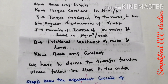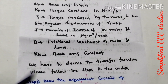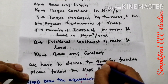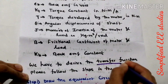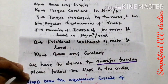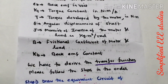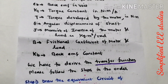Now our ultimate aim is to derive the transfer function of the armature control DC motor. Transfer function is nothing but the Laplace transform of output to the Laplace transform of input where all the initial conditions are zero.